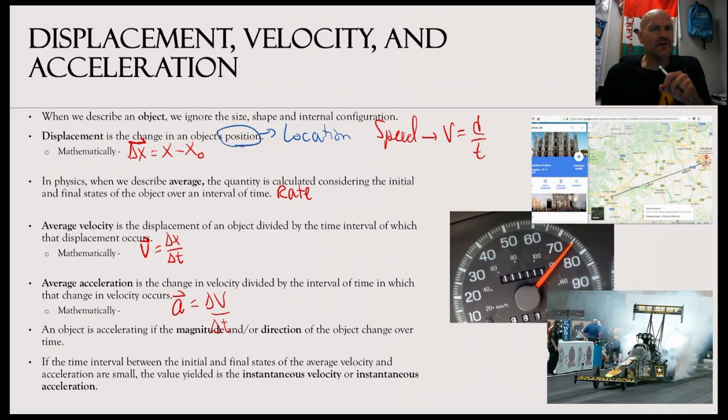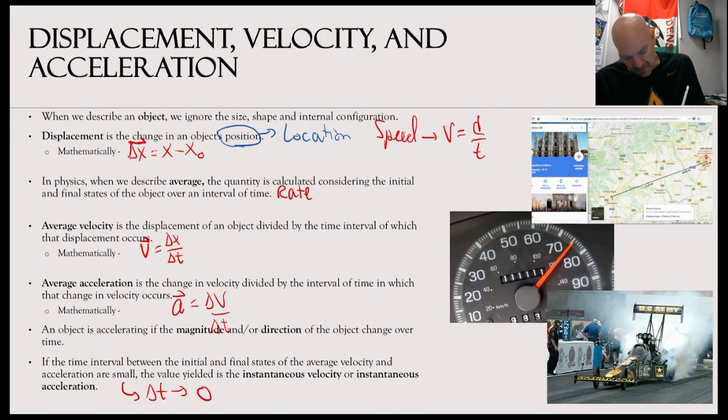Now, this is a little bit where calculus comes into play. So if the time interval between the initial and final states of the average velocity and acceleration are small, as in delta t approaches zero, then we have what is called instantaneous velocity or instantaneous acceleration. So that means at a particular moment in time. For example, a speedometer, which you see here on the slide, that tells us an instantaneous speed or velocity. In fact, it would just tell us an instantaneous speed because we don't know what direction we're heading. So that means if I look down at my speedometer at a particular moment in time, then I'm getting that's my speed at that moment.